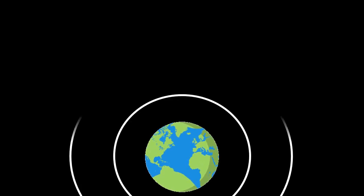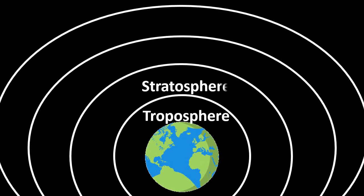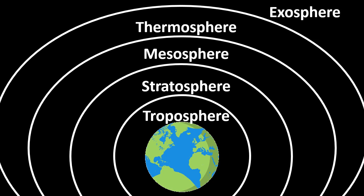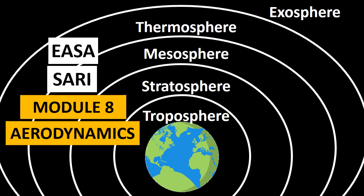The atmosphere around the earth is composed of different layers including troposphere, stratosphere, mesosphere, thermosphere and exosphere. In this video we are going to learn what these different layers are and what physical conditions exist in these layers. Moreover, if you are preparing for EASA module 8, i.e. basic aerodynamics, then this video might be helpful for you.